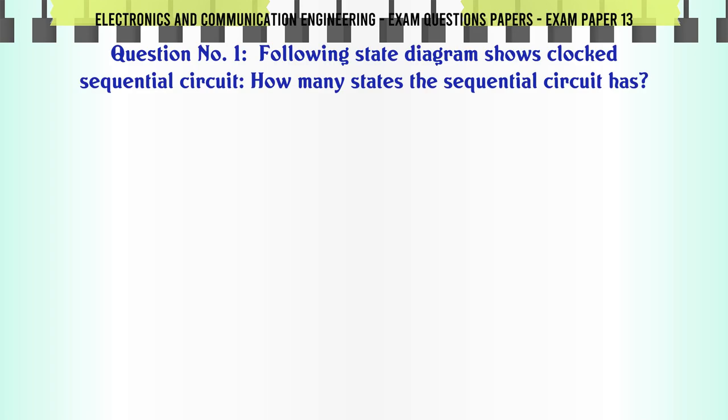Following state diagram shows clocked sequential circuit, how many states does the sequential circuit have? A: 6, B: 7, C: 5, D: 4. The correct answer is 5.